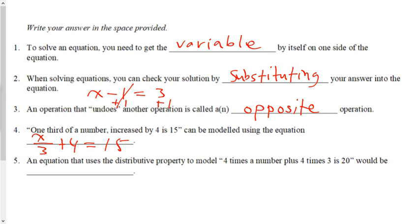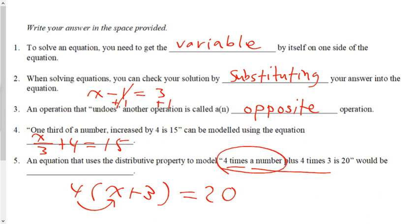And finally, question 5, an equation that uses the distributive property to model 4 times a number plus 4 times 3 is 20. 4 times a number plus 4 times 3. Oh, this was too early for this question. Okay, so the answer is actually this. And what this means is, this is 4 times a number. This is 4 times 3.